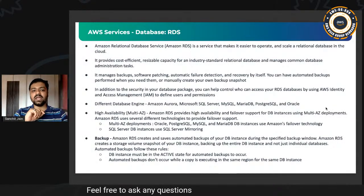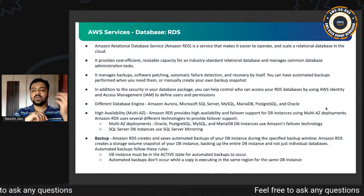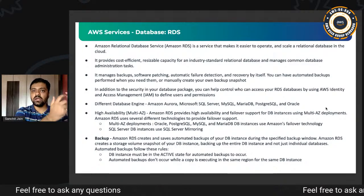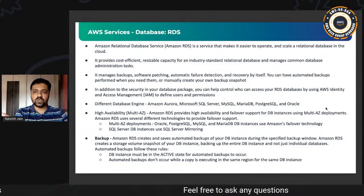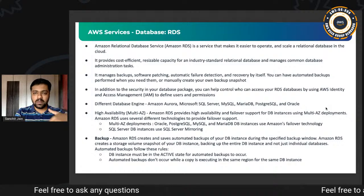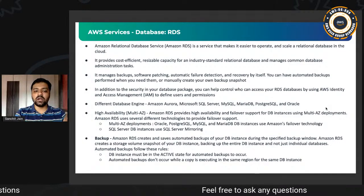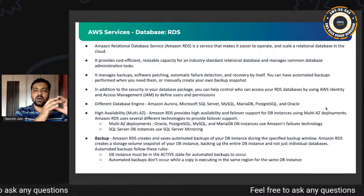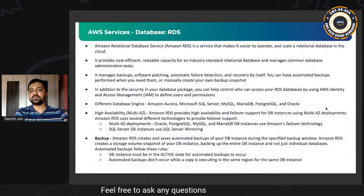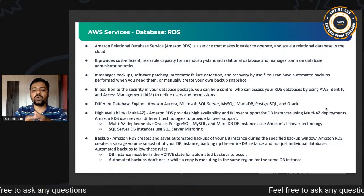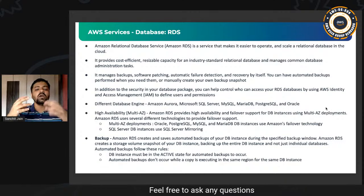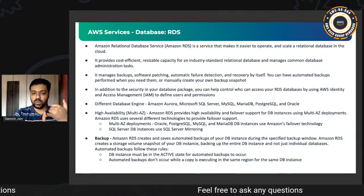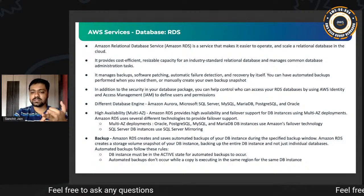AWS RDS is the Relational Database Service — a wrapper in which AWS provides the entire capability of different database engines over the cloud with cost-effective, resizable capacity, easy scaling, and proper security and IAM control. On on-prem, you are responsible for managing hardware, patching, and backups. AWS simplifies that by providing the same services with much more control and productivity. Database engines provided under RDS include Amazon Aurora, Microsoft SQL Server, MySQL, MariaDB, PostgreSQL, and Oracle.